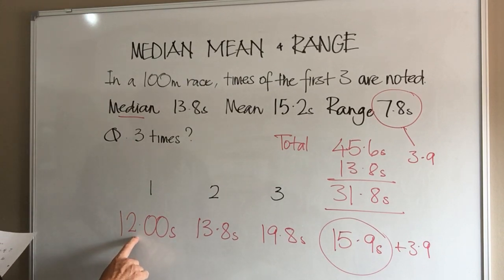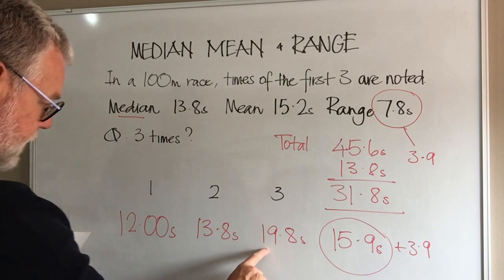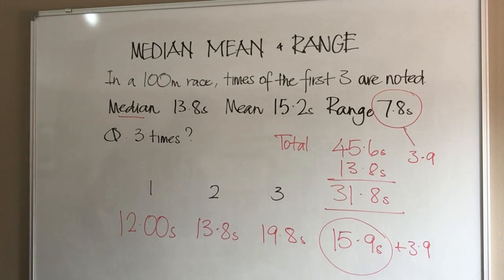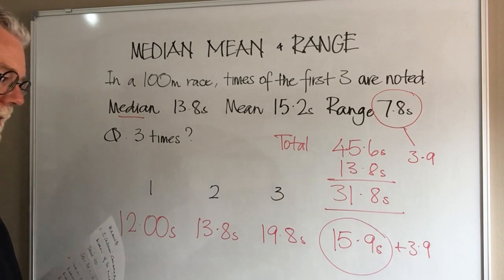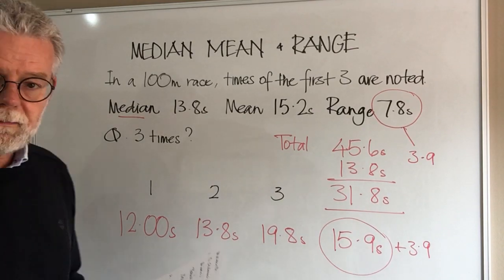The range has to be 7.8, so we subtract the smallest from the largest, which gives us 7.8. That tells us the times of the three runners: first past the post is 12 seconds, then 13.8 seconds, then 19.8 seconds.